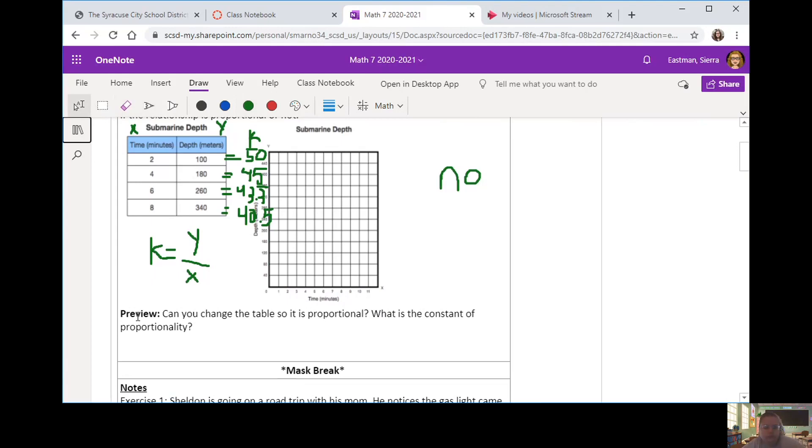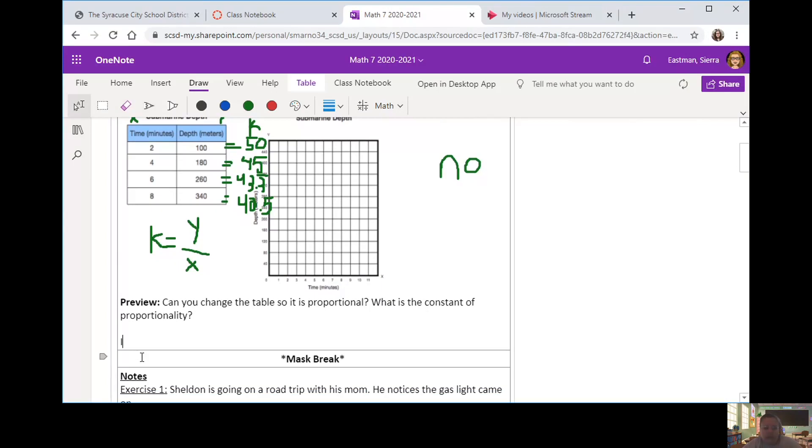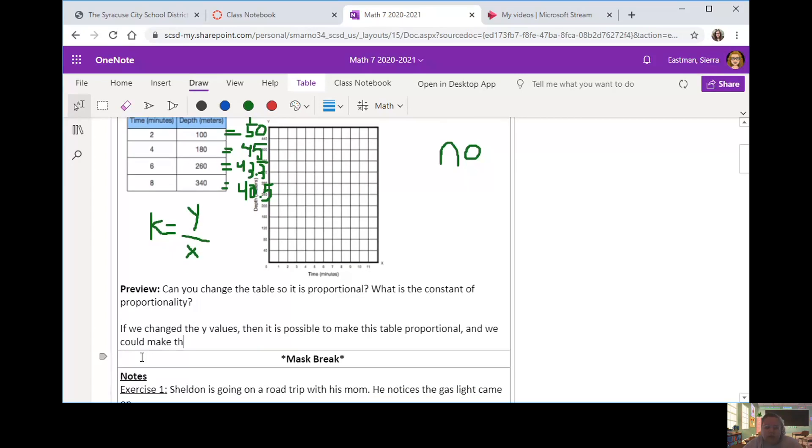If they all equaled 50, the constant would be 50. So I'm going to write that down. If we changed the Y values, it is possible to make this table proportional.